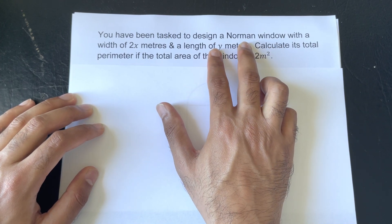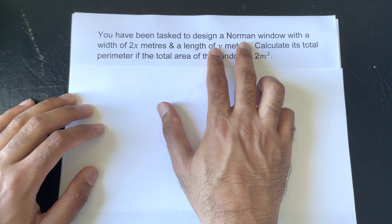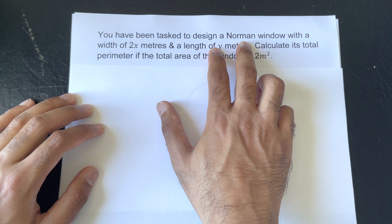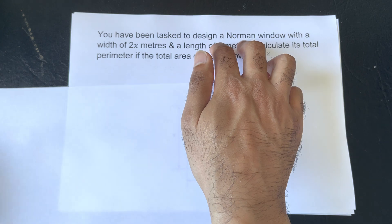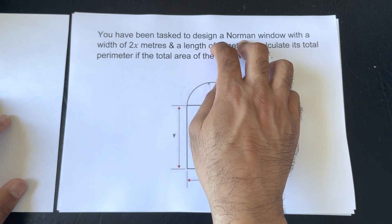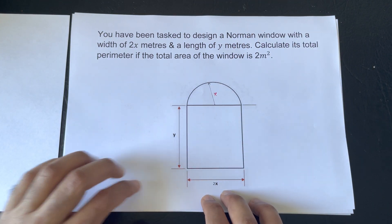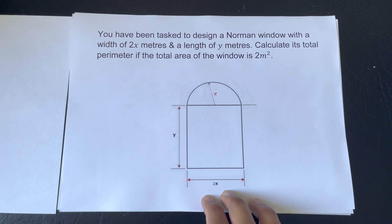Now, if you don't know what a Norman window is, a Norman window is a rectangle with a semicircle on top. So, it's a composite-shaped window, and it looks like that, as illustrated in the diagram.